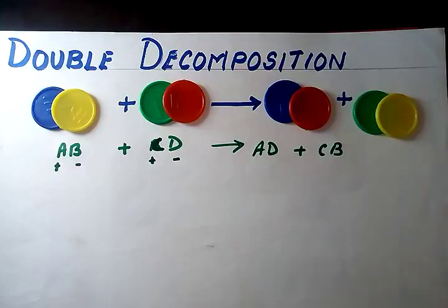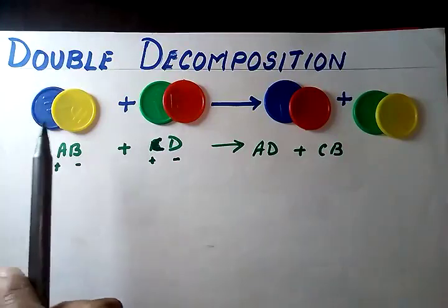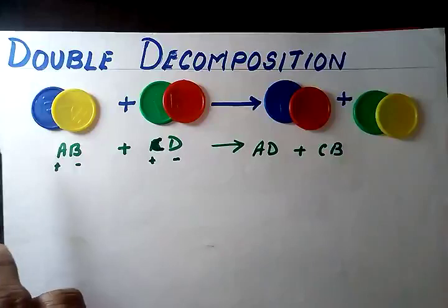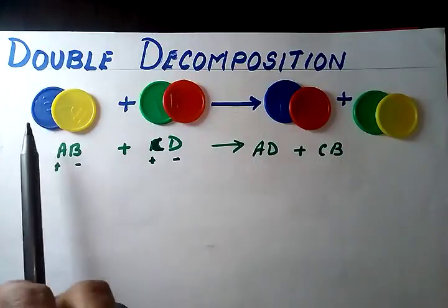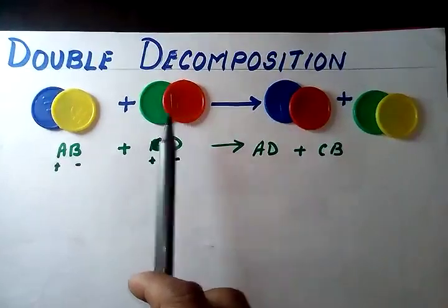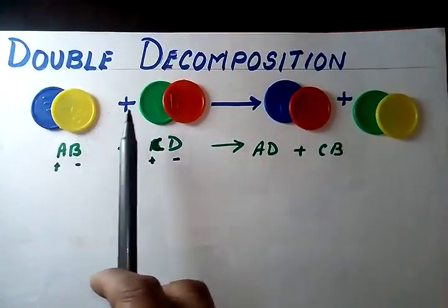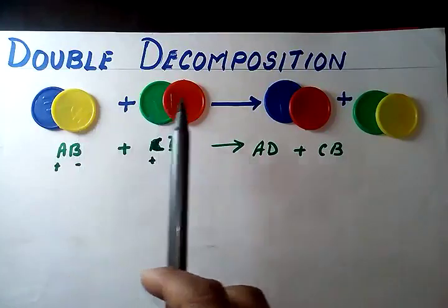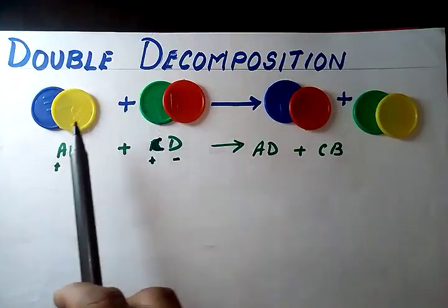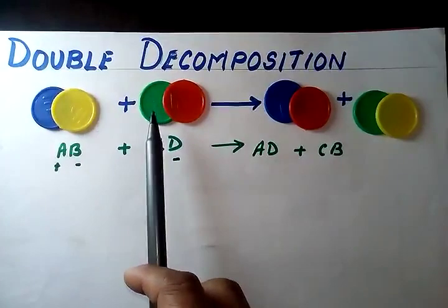If you look at the colors that have been kept here: blue is combining with red. Blue is a cation, red is an anion, so these two are combining. Here green is a cation, yellow is an anion, so they are undergoing a double decomposition.